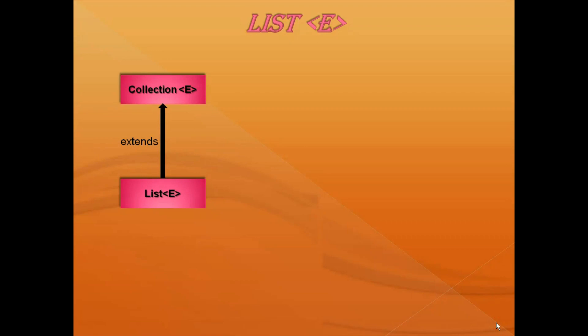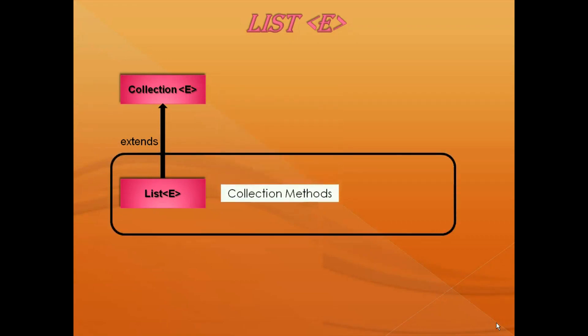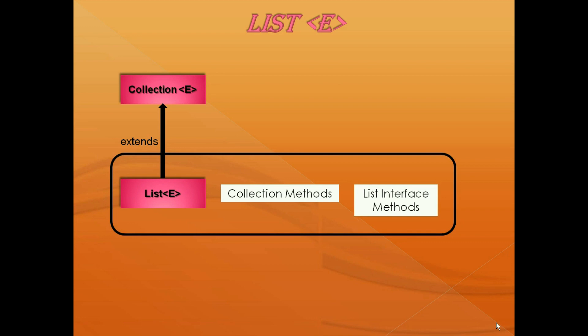We know that list interface extends from collection. Hence it supports by default all the methods of collection, along with some additional specific methods which are present in list interface. So what methods are there in the list interface? Let us discuss now. First, we will talk about those methods which access objects based on their index position.